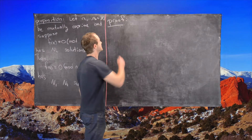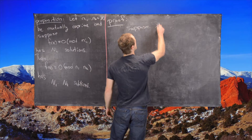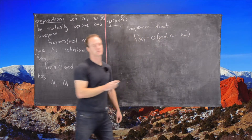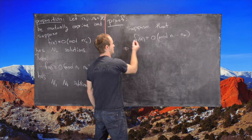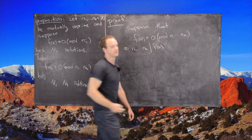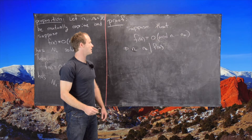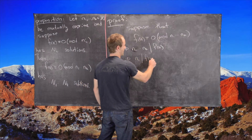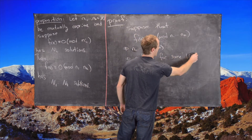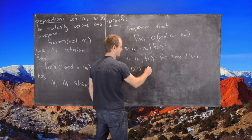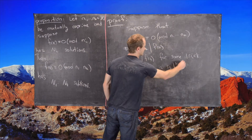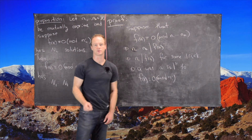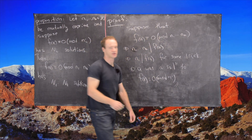Now we approach this from the other direction. Suppose f(a) ≡ 0 mod N1·…·NK. That means N1·…·NK divides f(a). Since the n_i's are mutually relatively prime, it follows that n_i divides f(a) for each i between 1 and k, which tells us a was a solution to f(x) ≡ 0 mod n_i — one of the solutions we were working with originally. That finishes the proof.